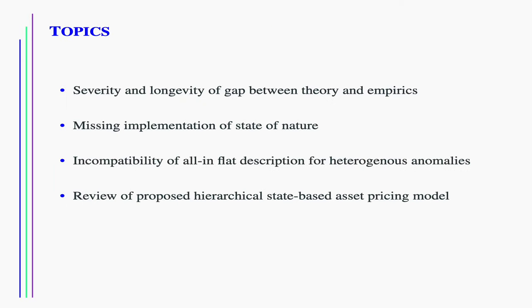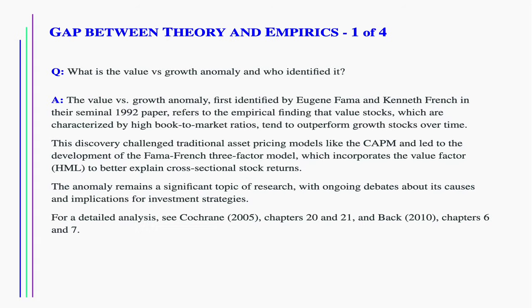The interview questions will be divided into four categories: first, the severity and longevity of the gap between theory and empirics; next, the missing implementation of state of nature; followed by the incompatibility of all-in-flat description for heterogeneous anomalies; and then, the review of proposed hierarchical state-based asset pricing model. Let's start with the big picture, overviewing the severe gap in asset pricing between the theory and empirics. Professor, what is the value versus growth anomaly and who identified it?